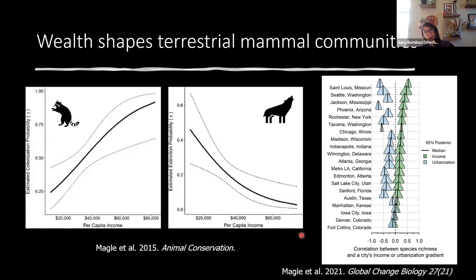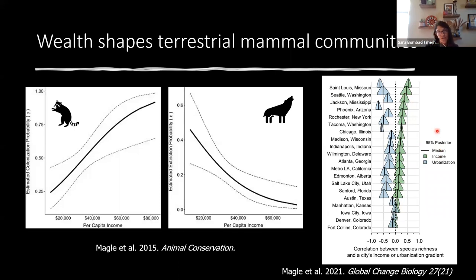More recent work by Seth Negley and colleagues looked at the correlation between medium-to-large mammal species richness and a city's income or urbanization gradient. Across most cities, they found a negative relationship between urbanization and richness, and a positive relationship between income and mammal species richness. Interestingly, they didn't find that pattern in Fort Collins or Denver.